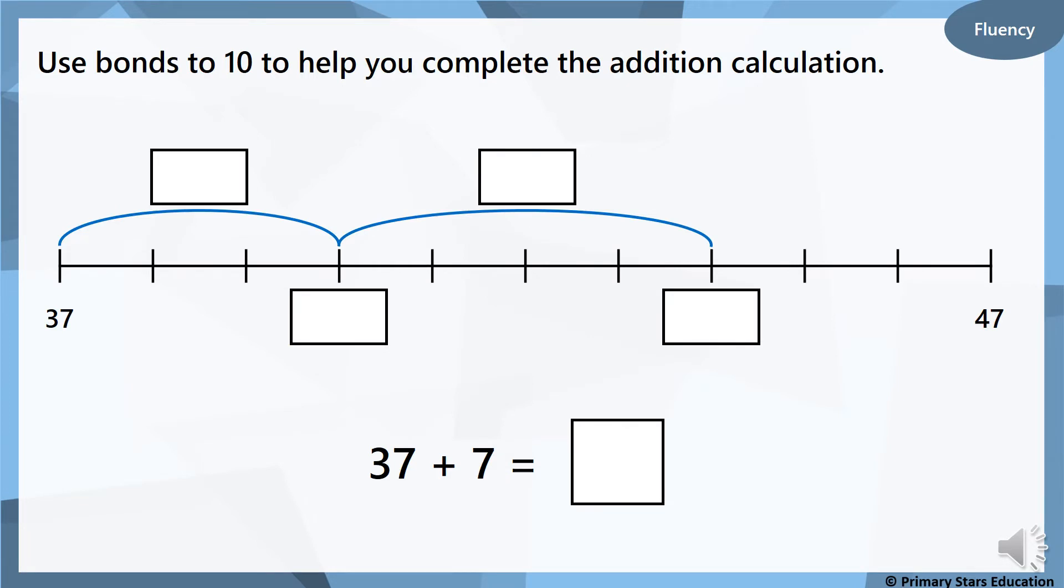This time we're going to use our number bonds to help us complete the addition sentence. So we're doing 37 add 7. How many is it to the next 10? So 37, the next 10 would be 40. How many are we going to add on? What's 7's number bond to 10? Have a think. How many are we going to need to add on? So well done if you've got that. 7 add 3 will take us to the next 10.